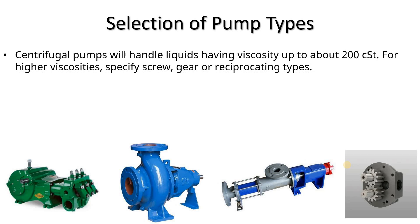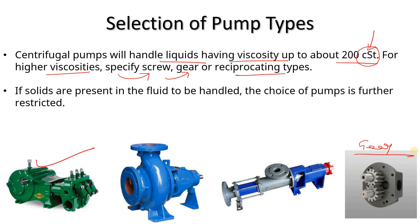If I talk about viscosity — centrifugal pumps can handle liquid viscosity up to 200 CST (centistokes). Can you let me know in the comments which physical quantity has this unit? If your liquid has a viscosity up to 200 CST, you can use a centrifugal pump. But for higher viscosity, you cannot use a centrifugal pump — for higher viscosity we go towards screw pump, gear pump, or reciprocating pump. You can also observe this in your industry.